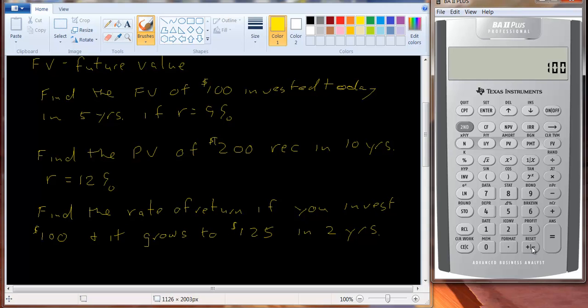So let me just clear that and let me just put in the 100. Everything else is still in there. Change the sign, plus minus key, PV, and then compute the interest rate. Now we get an interest rate, 11.8 percent.